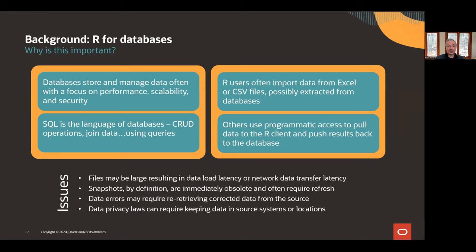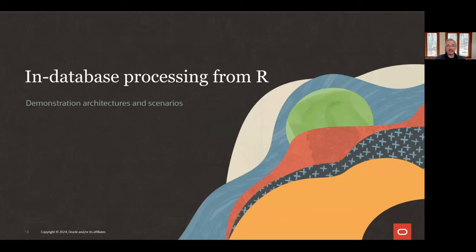When you need data, you may end up importing snapshots from Excel or CSV files. Some R users may have direct programmatic access to pull data from the database to the R client and push results back — but this round trip can result in scalability issues such as access latency and local memory limitations. Data snapshots are also obsolete by definition and often require refreshing. Data privacy laws can require keeping data in secure systems. Our focus is therefore on enabling in-database processing from R.